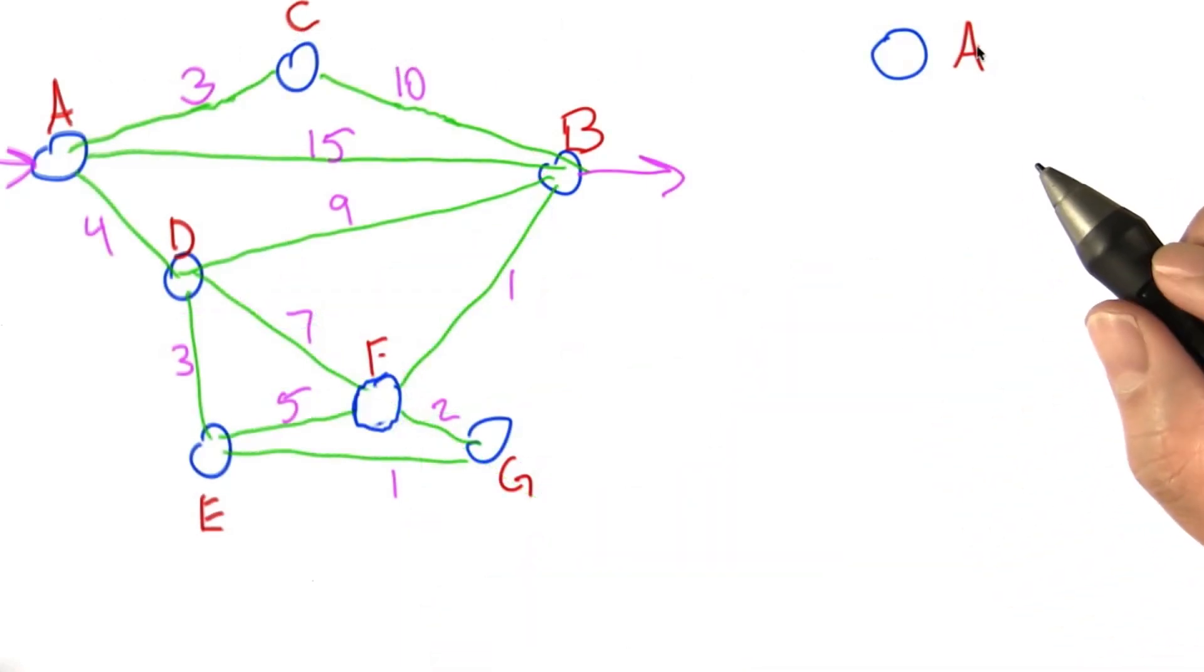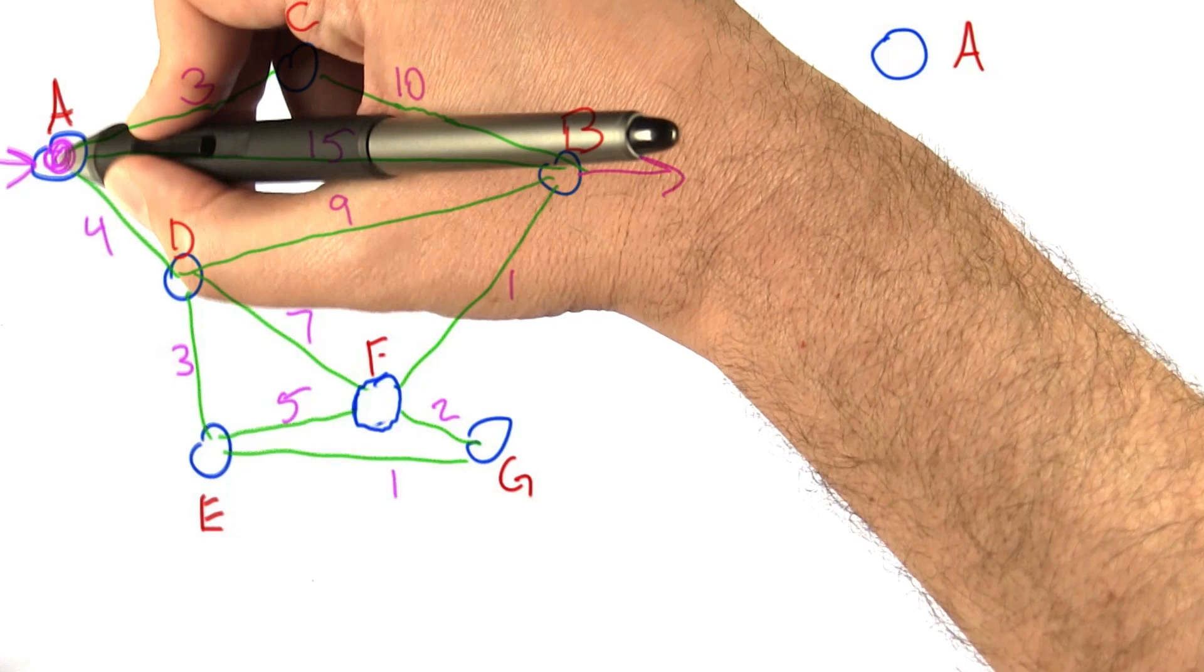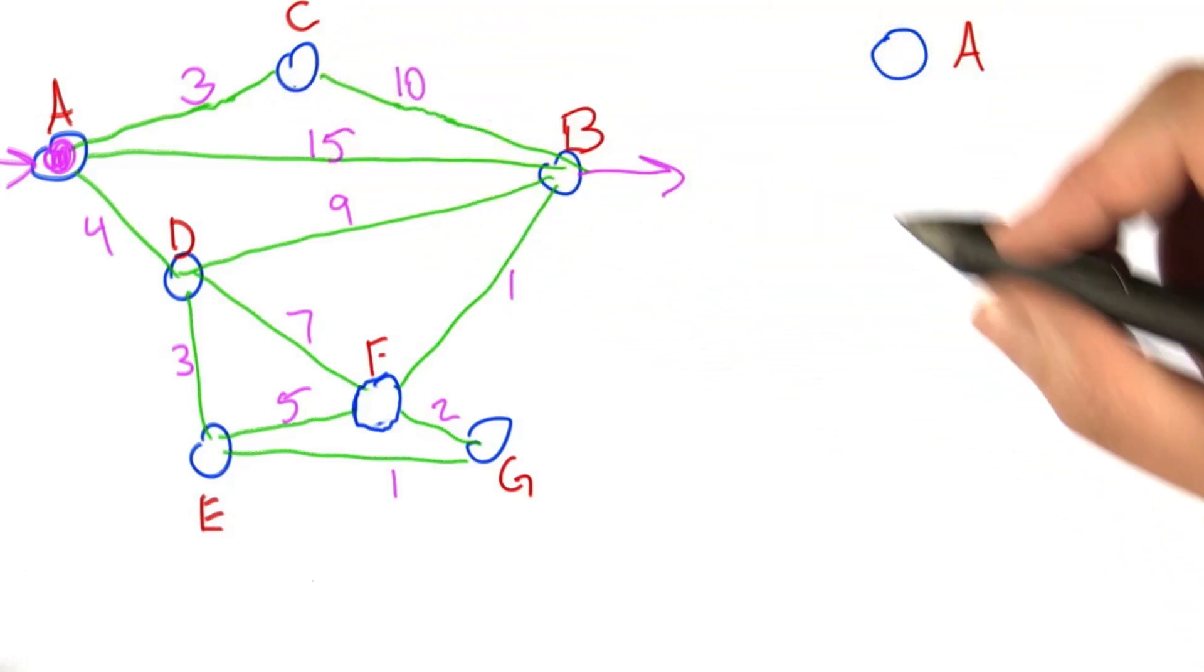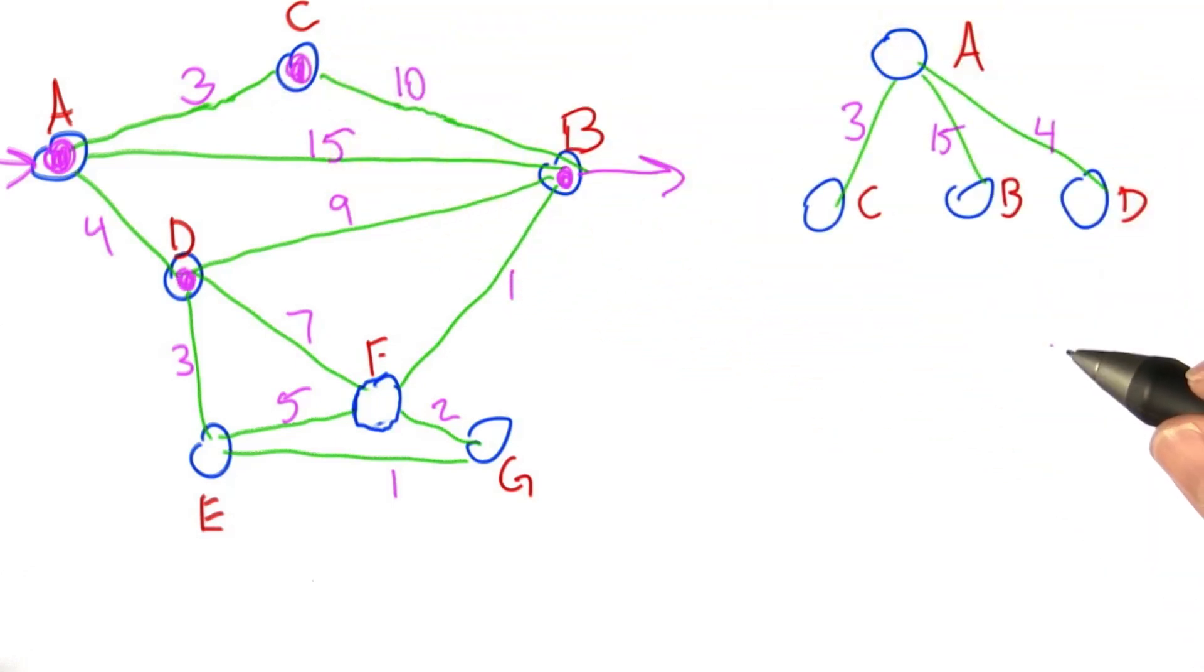Let's remember what breadth-first search does for this graph starting from A. We mark A as visited and add it to the open list. We pull it off the open list and add all the neighbors of A to the open list, which are C, B,